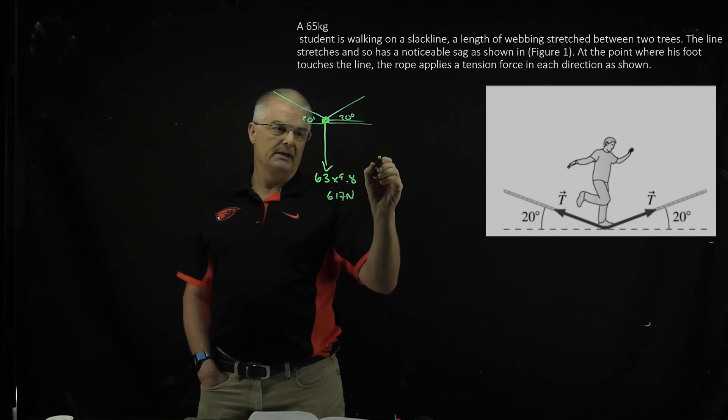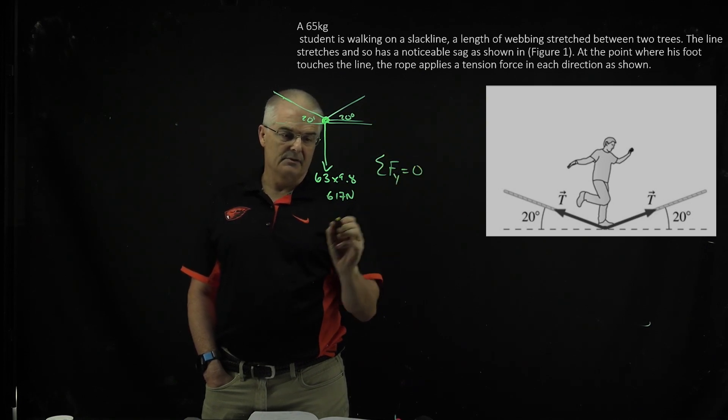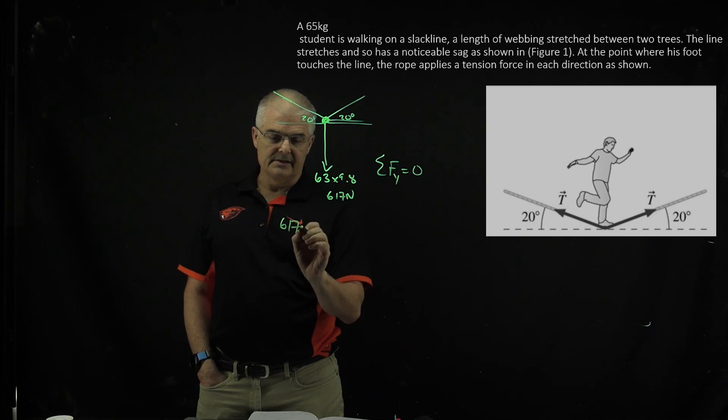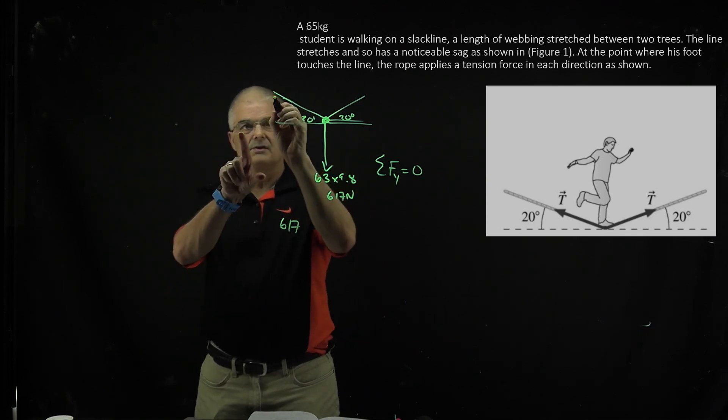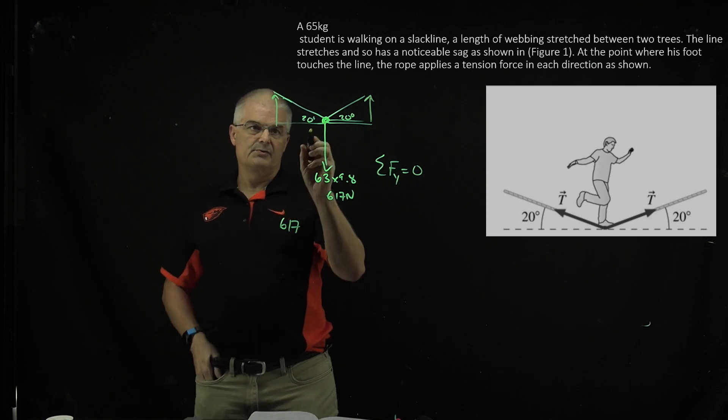Now remember the key thing here is that the sum of the forces in both the x and the y, but here we care about the y, has to add up to zero. So I'm going to say 617 has to equal to these two upward forces, and you have to play a SOHCAHTOA game to solve this problem.